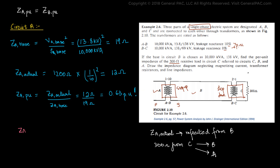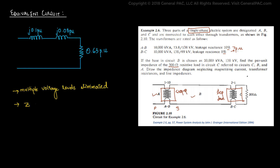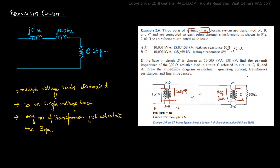Finally, we have the per unit impedance in all parts of the power system, and it equals 0.63 per unit in all parts of the circuit. This reflects that when a power system consists of more than one transformer, the per unit impedance for every side of every transformer remains the same. The equivalent circuit is J0.1 per unit for the first transformer, J0.08 per unit for the second, and 0.63 per unit for the load in circuit C. Multiple voltage levels are eliminated, and the circuit consists of just impedances reduced to a single common scale. No matter how many transformer voltage levels exist, we only need to calculate impedance for one side of one transformer.